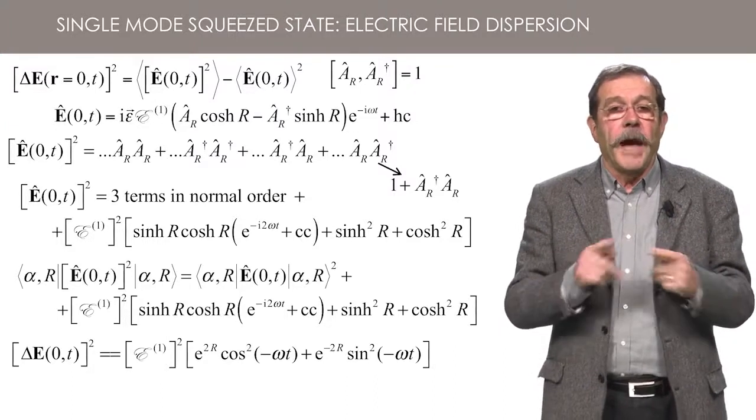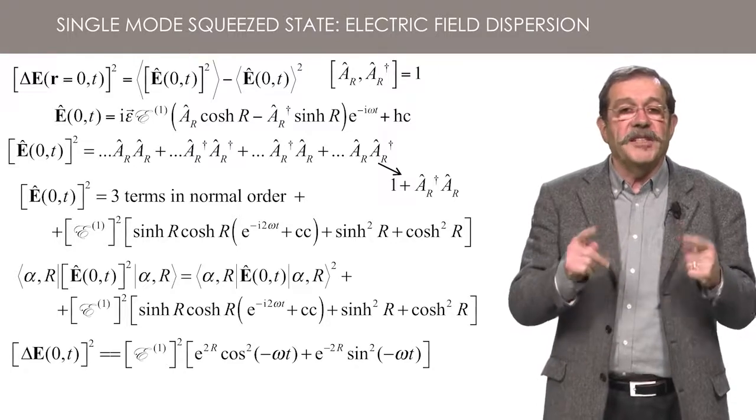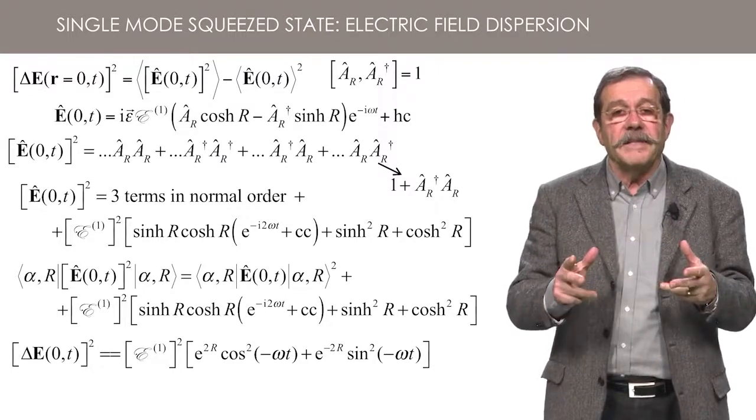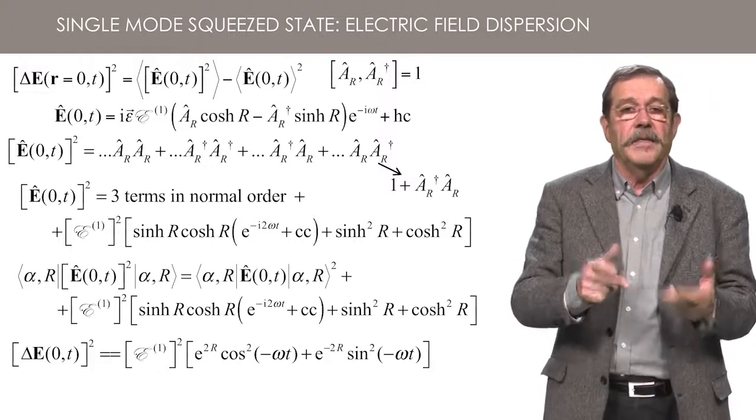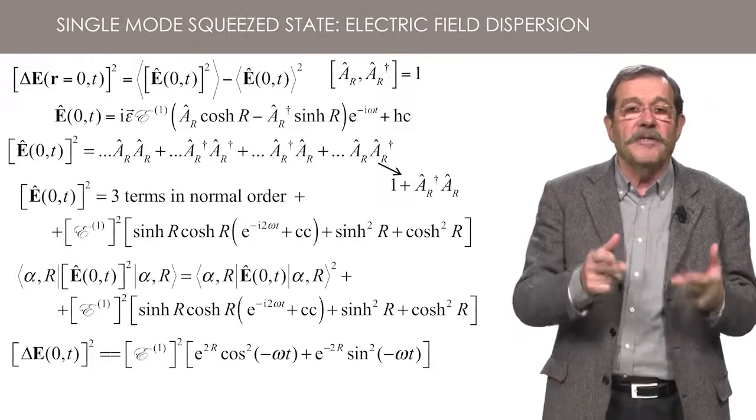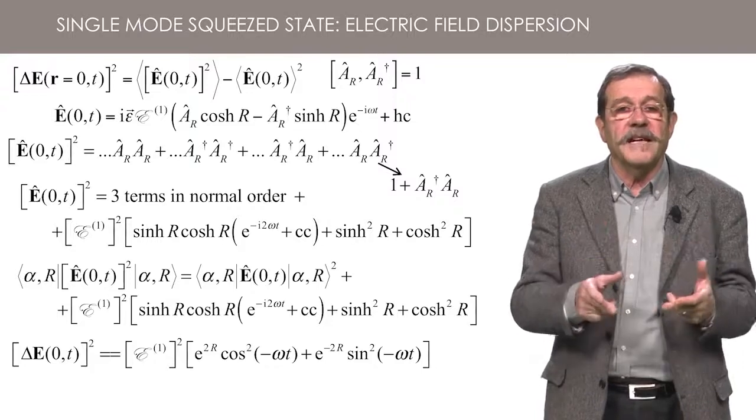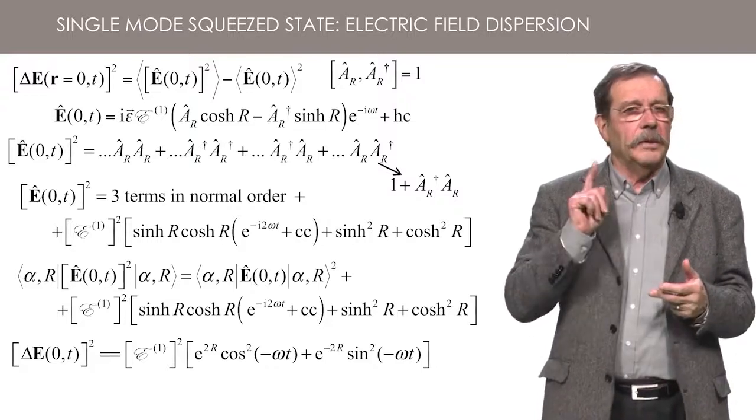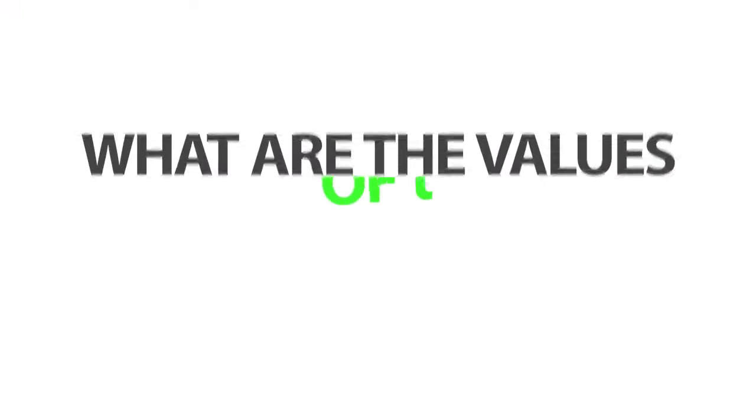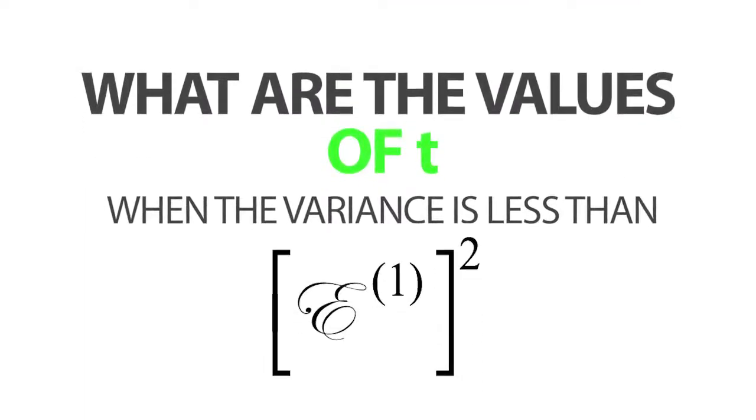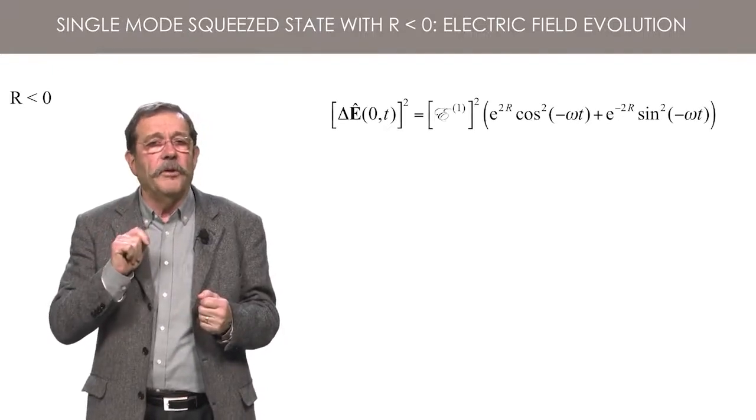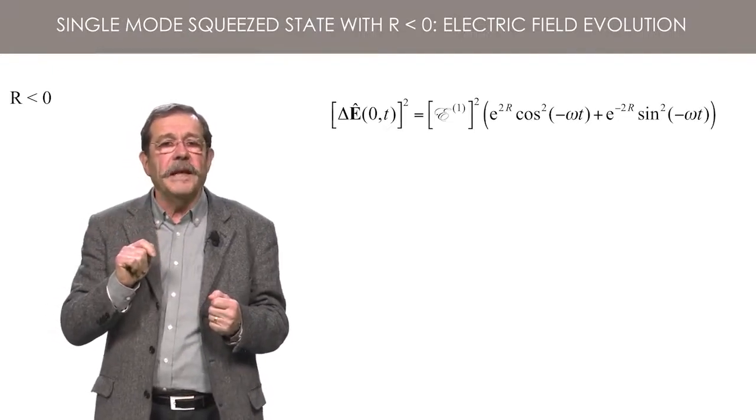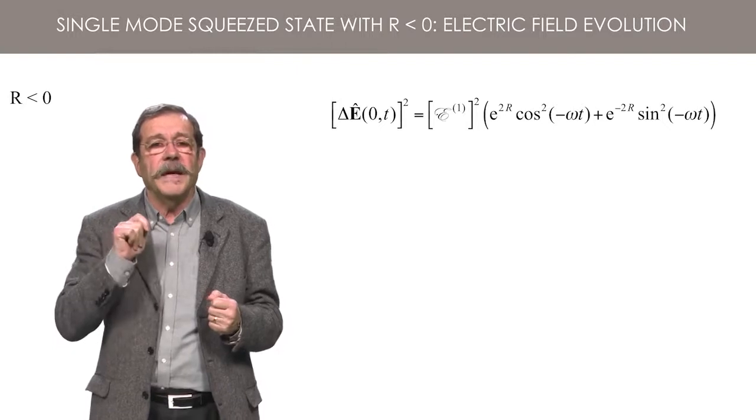Now the variation is such that there are times where the variance may be less than E1 squared, that is to say less than the value for a quasi-classical state. Is it clear to you? Have you found the times when the variance of the field is less than E1 squared?